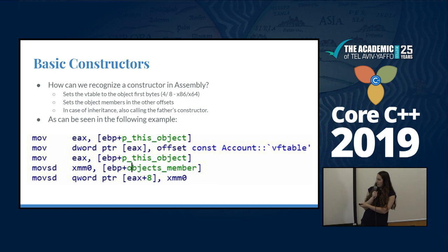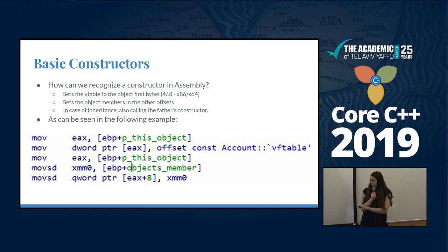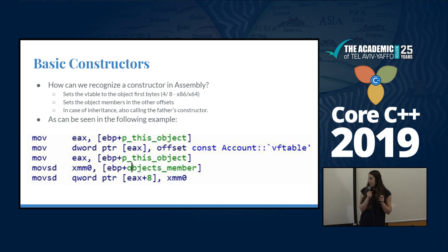In this example code, you have the Vtable assigned to EAX. This example is 32-bit, which means everything is pushed onto the stack instead. You have the Vtable assigned to the first bytes in EAX at offset zero. Then you have the object member stored in XMM0 register, and stored in EAX plus eight — meaning it's stored as the second member after the Vtable pointer.